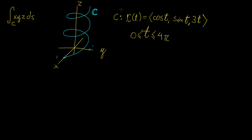It is a helix, and we're already given the parameterization. We represent x as cosine of t, y as sine of t, and z as 3t. This means the helix has a constant radius of one — if you project every point onto the xy-plane, you just get a circle of radius one. The radius is not changing, which is why there is a coefficient of one in front of those two functions. And 3t means this value is basically just increasing with z.